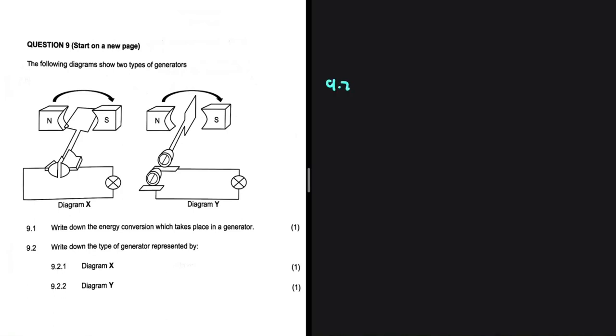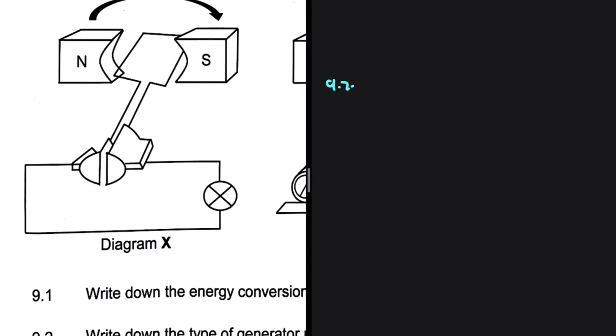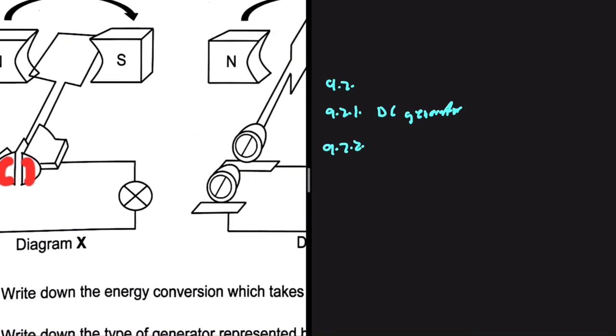Let's look at 9.2: write down the type of generator represented by diagram X. If you look at diagram X, you're going to realize that we have split rings. As soon as we see split rings, we know that we have a DC generator.